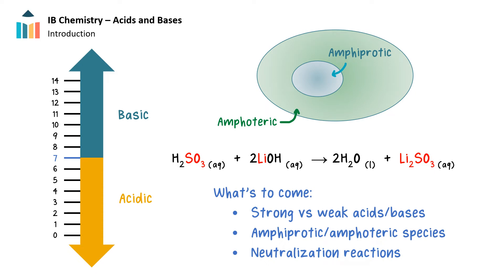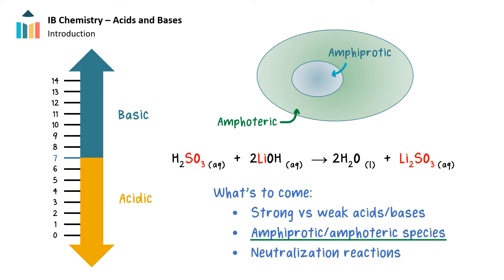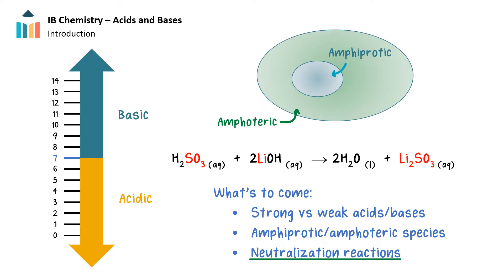In this video, we'll delve deeper into the properties of acids and bases. More specifically, we'll talk about the difference between a strong and a weak acid or base. We will also discuss the concept of amphiprotic and amphoteric species. Finally, we'll talk about how acids and bases can react together in neutralization reactions.